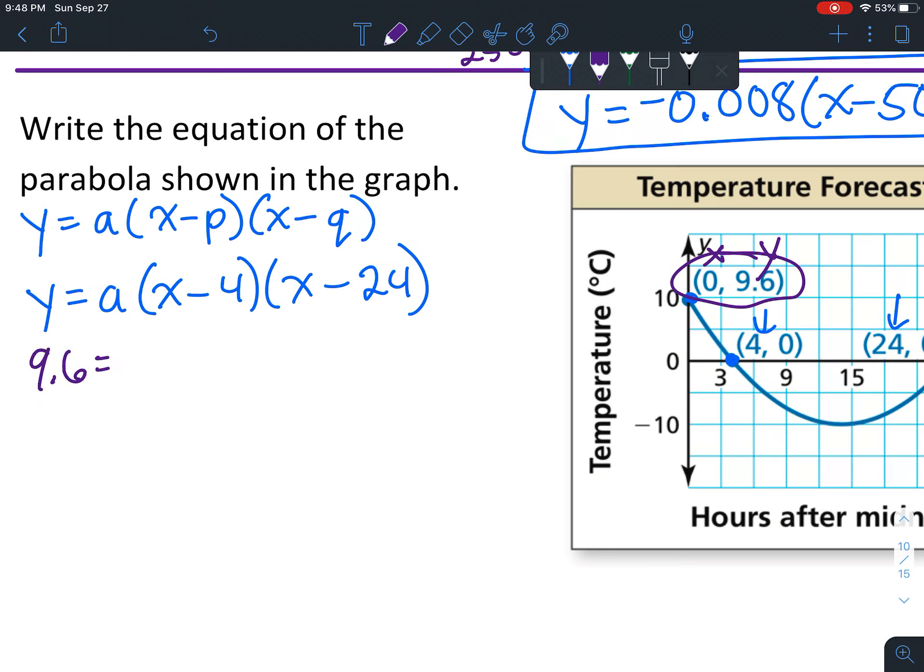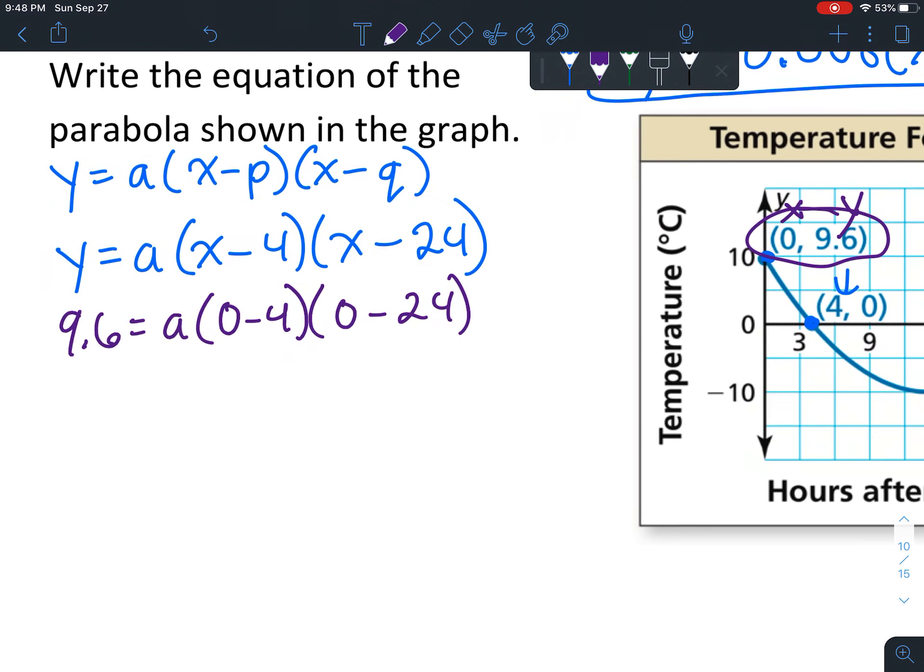That's kind of fortunate to have 0 - makes it a little bit easier here. So that essentially just becomes a times negative 4 times negative 24.